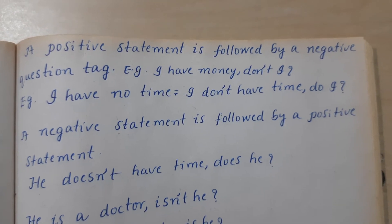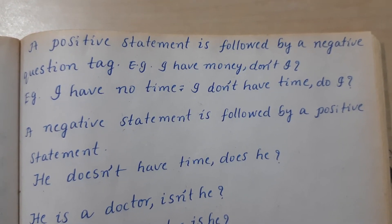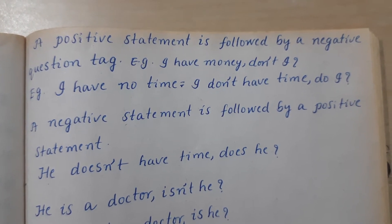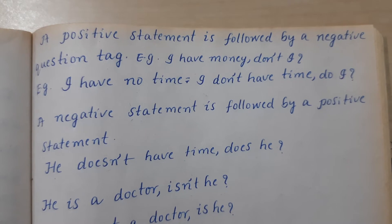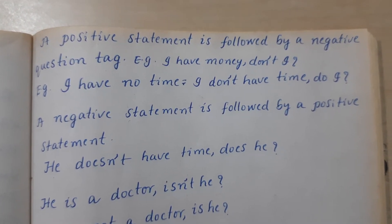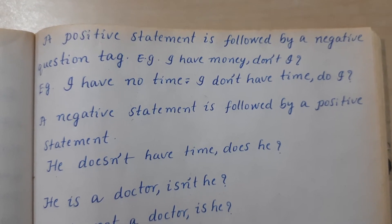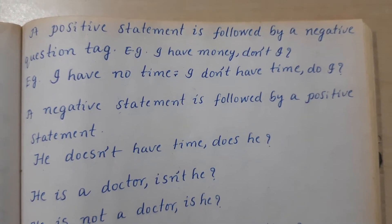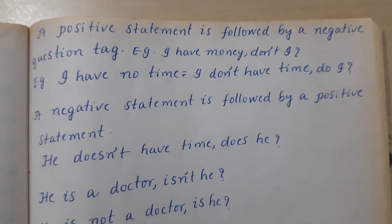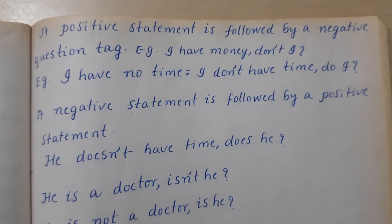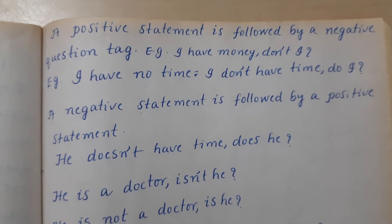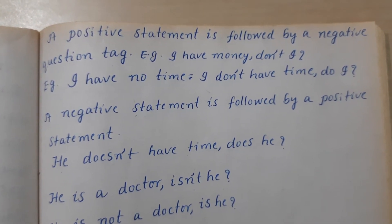A positive statement is followed by a negative question tag. Example: 'I have money, don't I?' Now, 'I have no time' — this means 'I don't have time,' so the statement is negative and the question tag will be positive: 'I have no time, do I?'